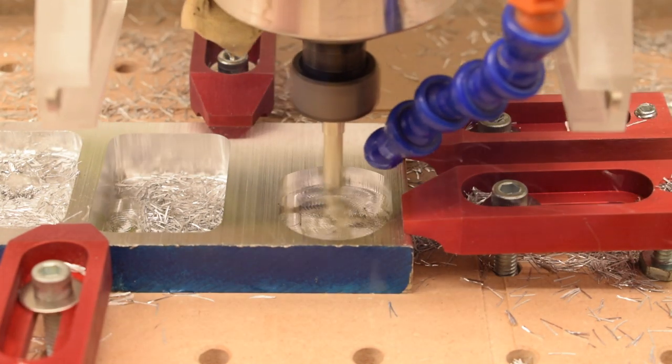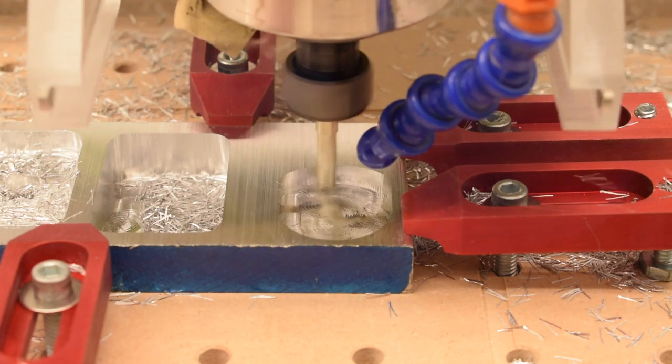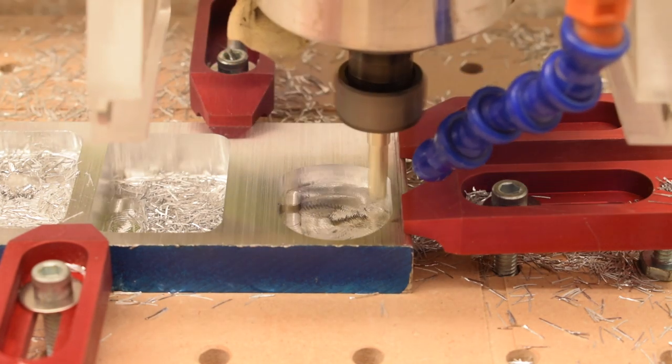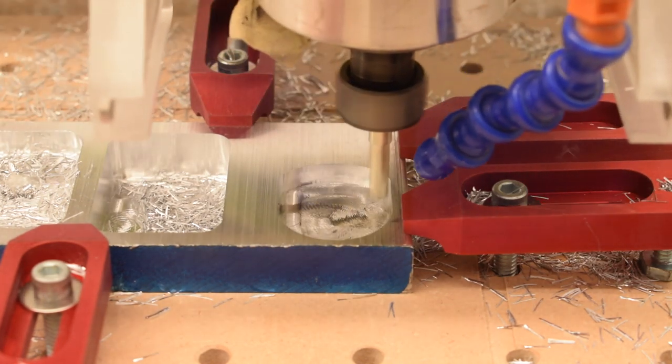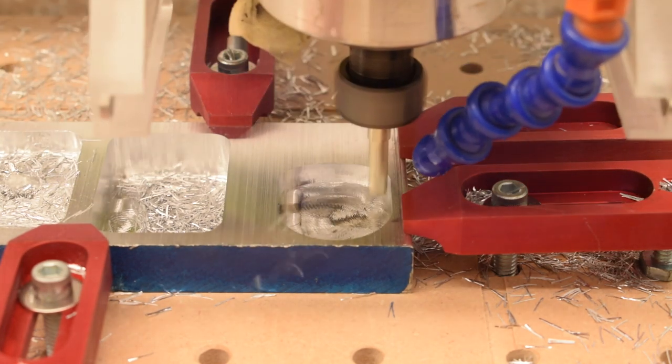Another word of caution is that the chips coming off a cut this aggressive are going to be quite hot. Shearing metal across such a large surface area releases a lot of heat, and despite your best efforts at maximizing chip load, a good amount of it will still go into the part so it will get quite warm to the touch if you're doing a lot of material removal.